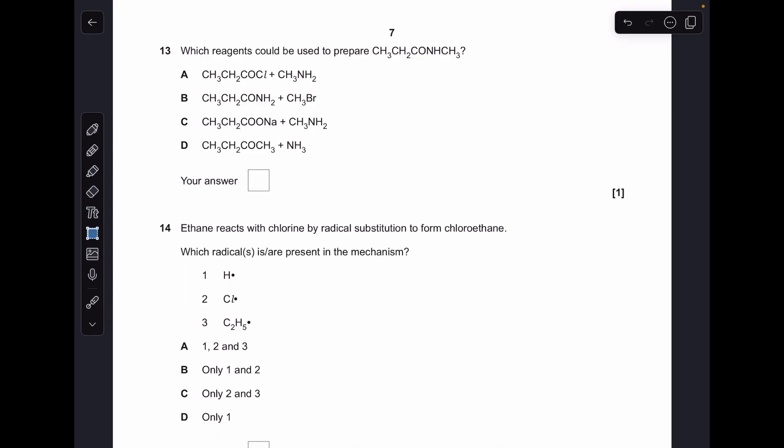Question thirteen. Really important that you know your reaction pathways inside out. This thing here is a secondary amide. You can make them from acyl chlorides with primary amines, and that's what you've got in A.